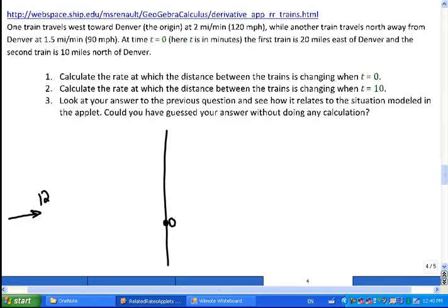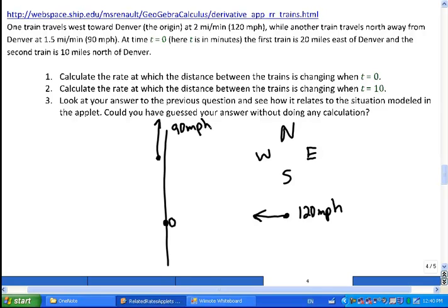West is, let me see, never, yes you're right. You think I would know that living on the west coast, but anyways, so it's going to be traveling towards Denver. So the train is somewhere like here, moving that way 120 miles per hour. Another train travels north, away from Denver. North I do know. So that's this way, going to be 90 miles per hour.